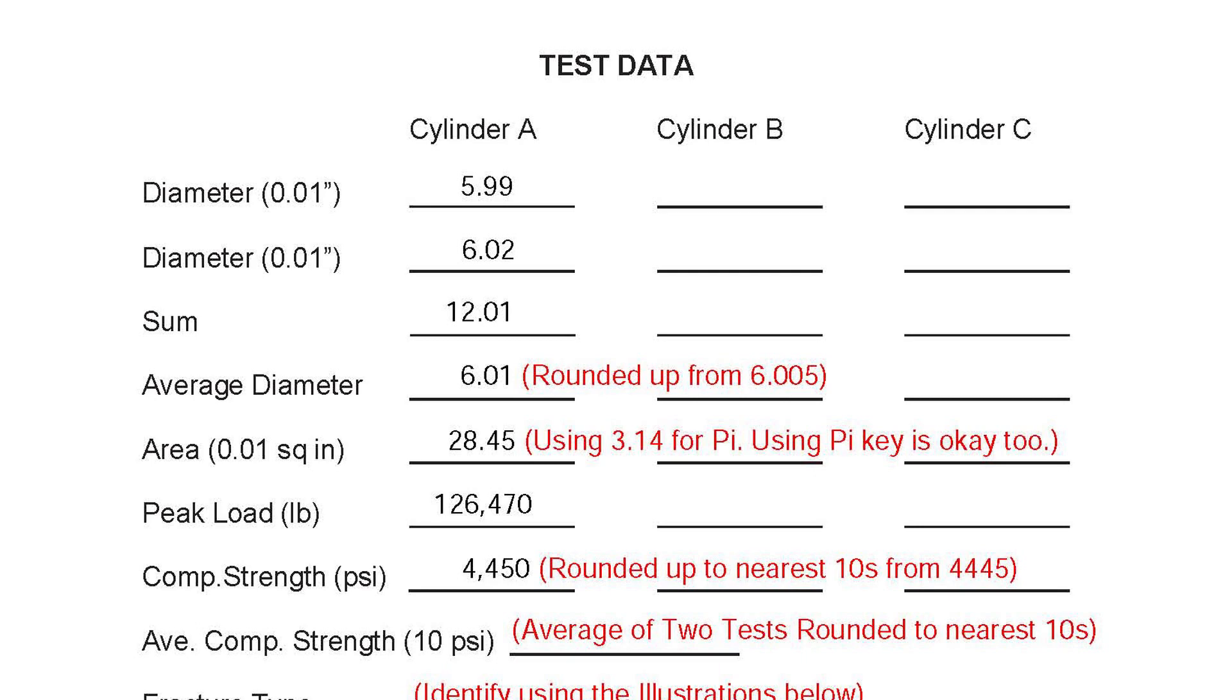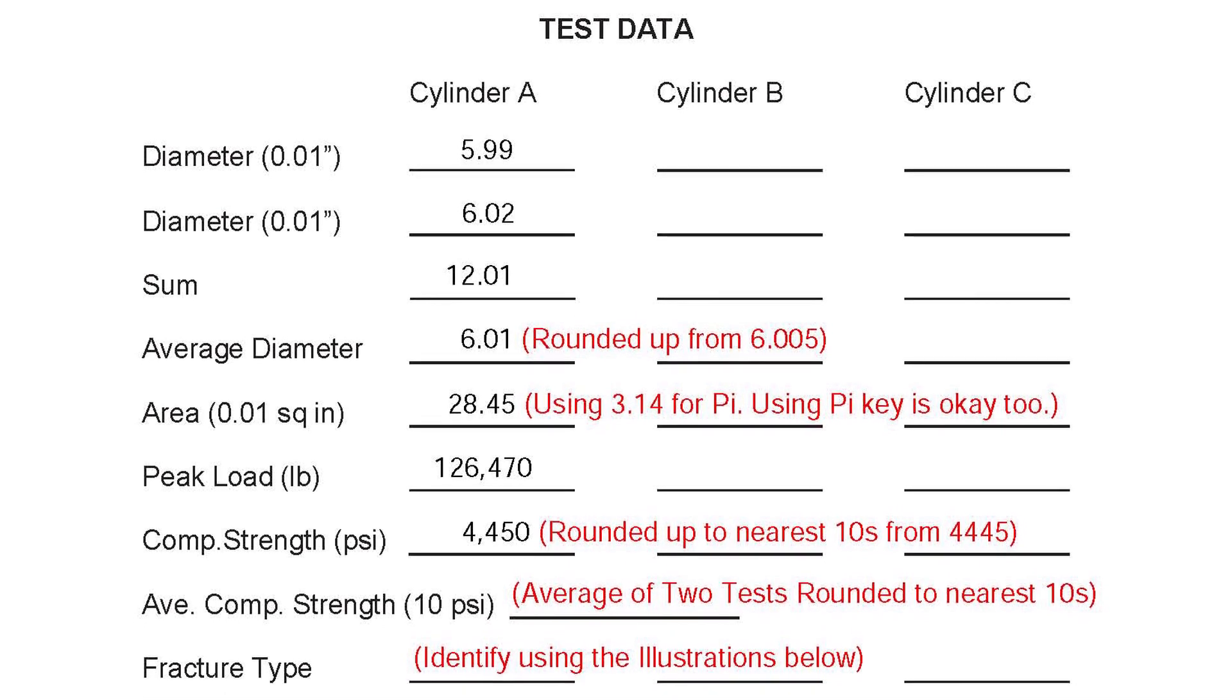To get the average strength we tally those two numbers up to get 12.01. Of course then dividing them by two to get the average gives us the number of 6.005. Now with the Wisconsin Department of Transportation these 5s get rounded up so our average diameter is 6.01.